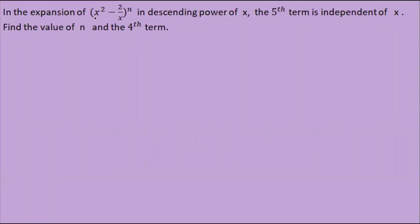In the expansion of (x squared minus 2 by x) the whole power n, in descending powers, the fifth term is independent of x. Find the values of n.